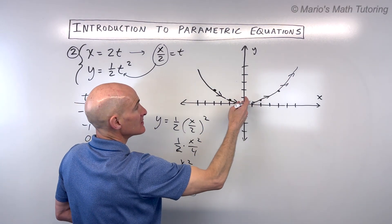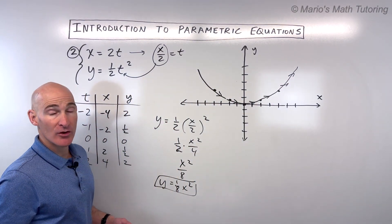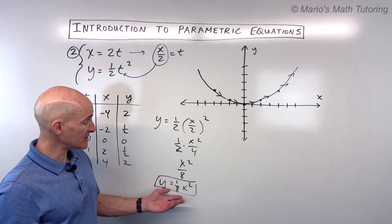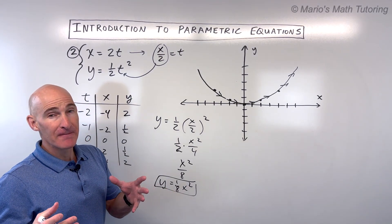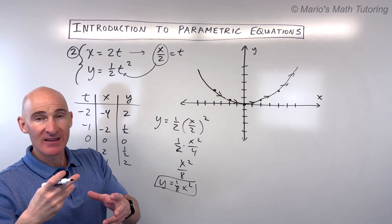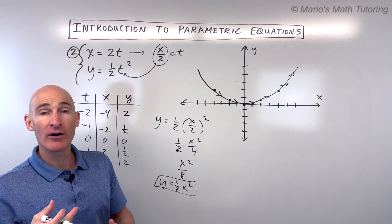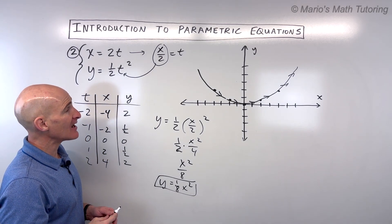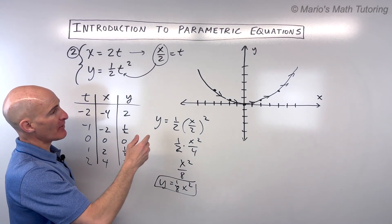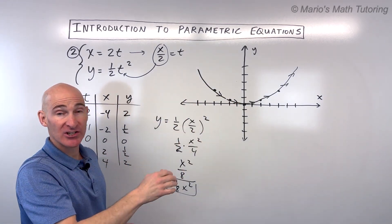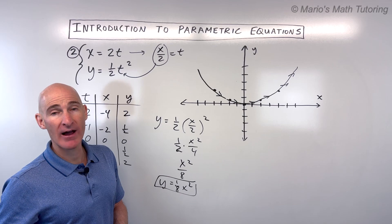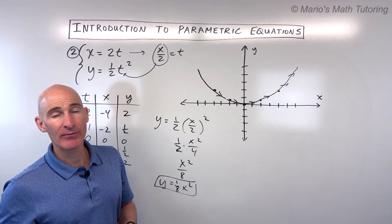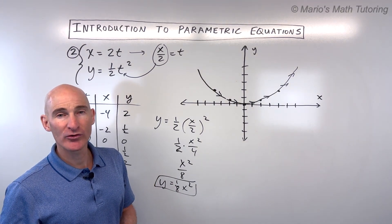Again, the only thing we're missing with the rectangular form is this additional layer of detail about where the particle is and the direction it's traveling. Let's dive into another example.